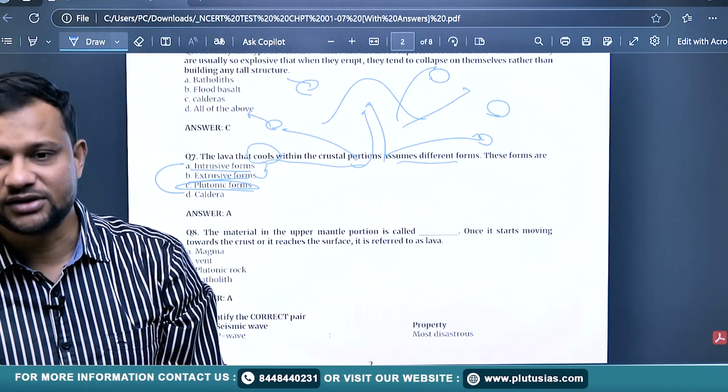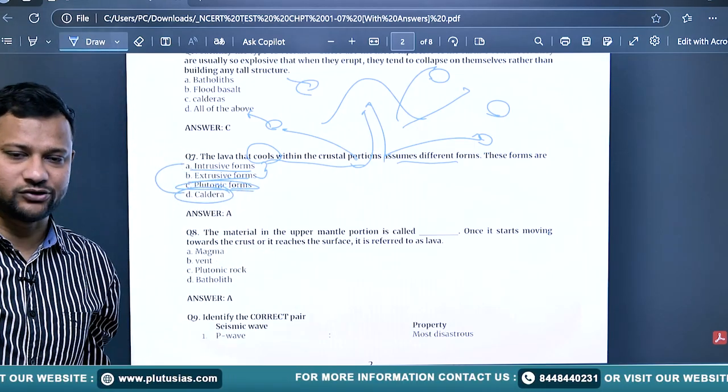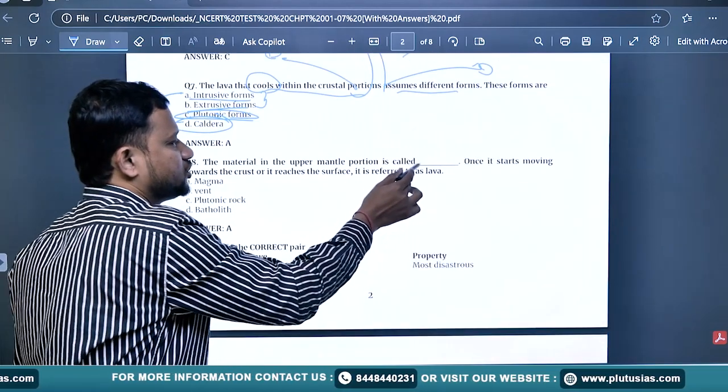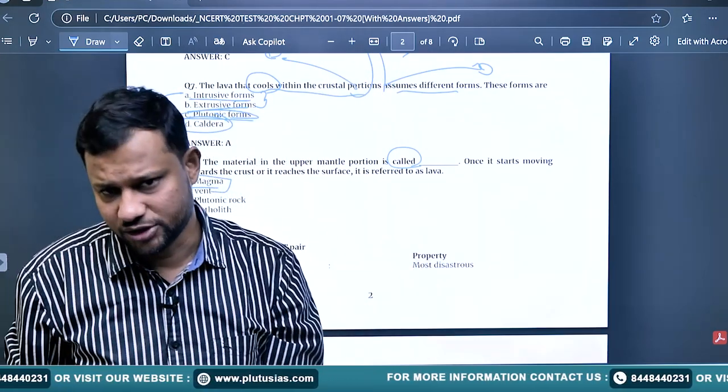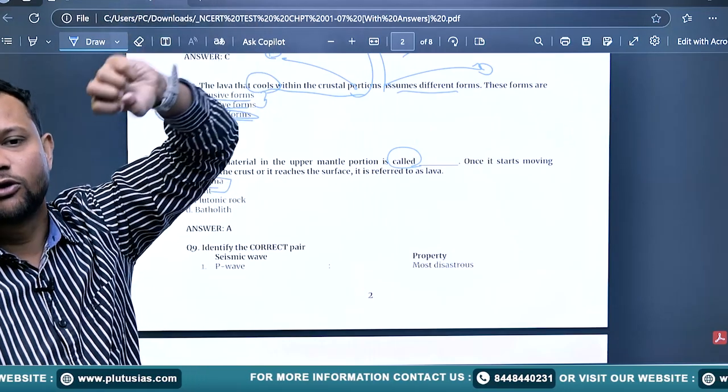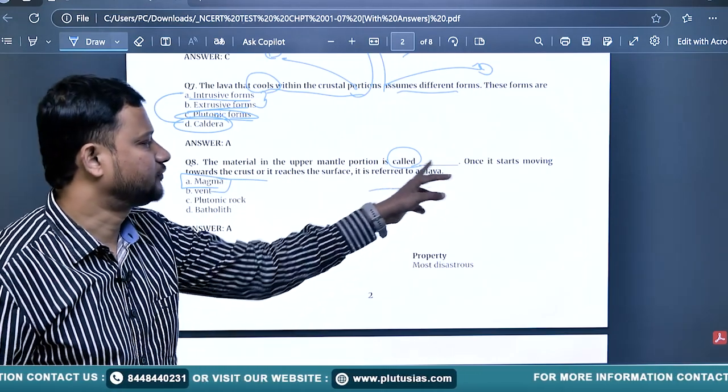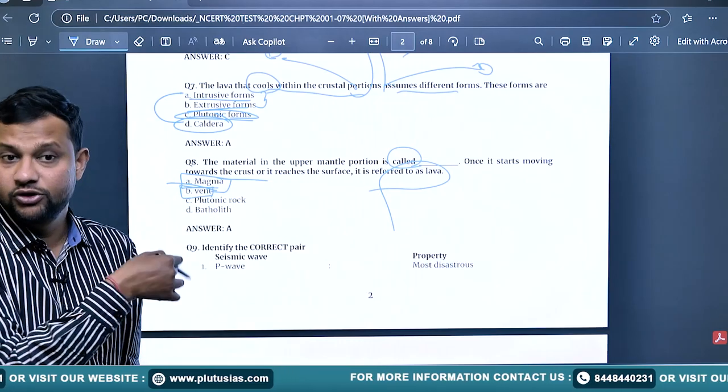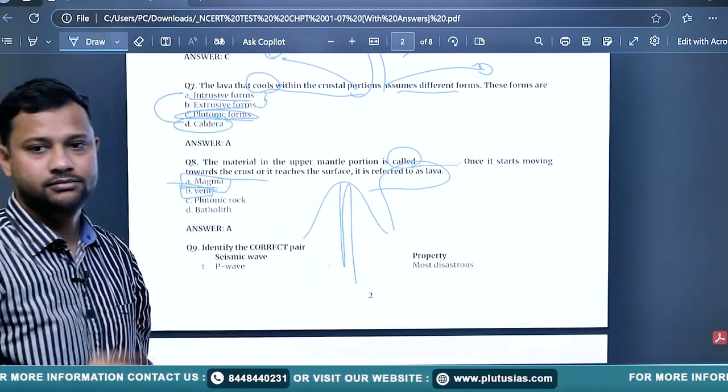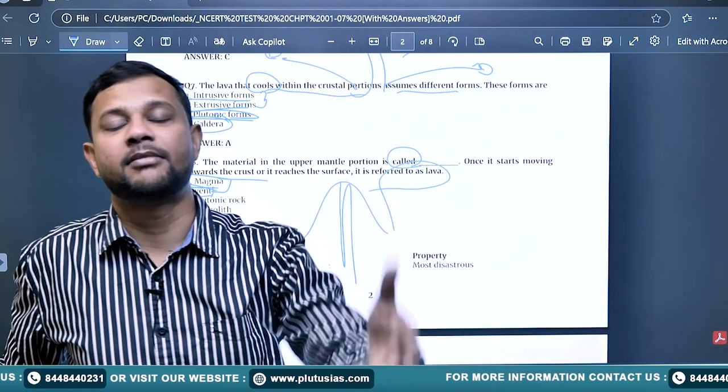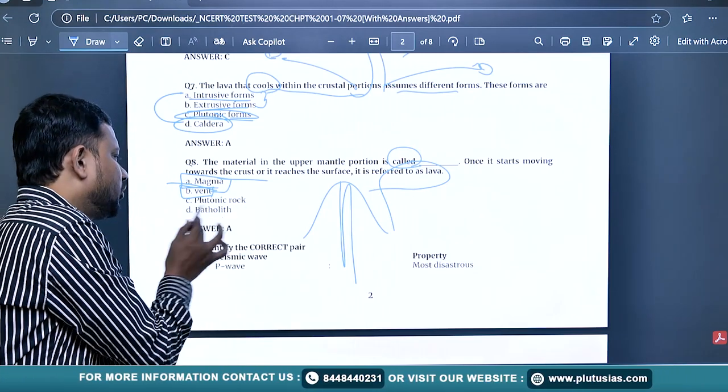Batholith is intrusive but lying at a greater depth - that is the plutonic form. Caldera is extrusive. The material in the upper mantle portion is called magma. Magma moves as lava on the surface. Once it starts moving towards the crust and reaches the surface, it's referred to as lava. A vent is a pipeline through which this magma erupts on the surface. Volcano is equally known as vent or pipe.